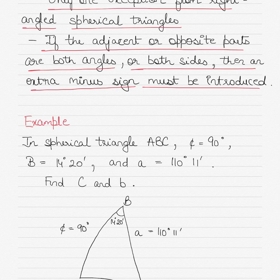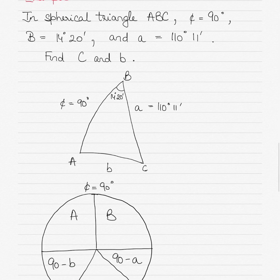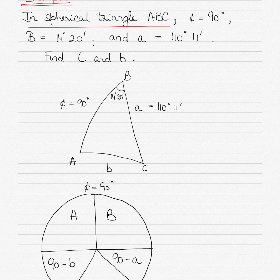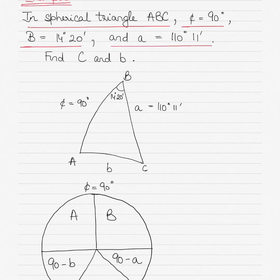Let's start solving a Quadrant Triangle where a side is 90 degrees. In this example, we have spherical triangle ABC where side C is 90 degrees, angle B is 14 degrees 20 minutes, and side A is 110 degrees 11 minutes. We have to find angle C and side B.